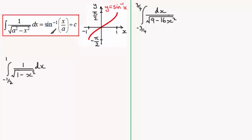So, using this result here, what it's going to be is equal to the inverse sine of x divided by 1. Just leave it as x. And then, this is between the limits of minus a half to 1.